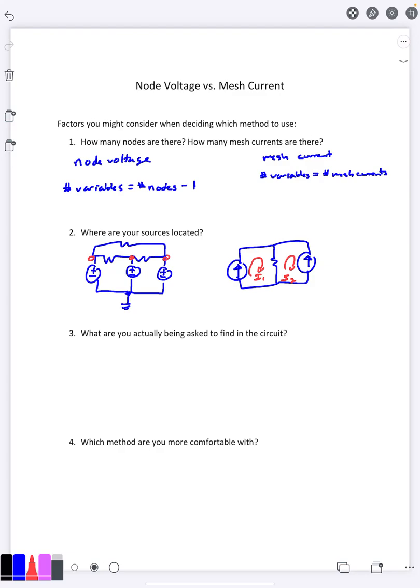Whereas if you're asked to find a voltage, you'd have to do an extra Ohm's law or something at the end to find that. Now again, doing an extra Ohm's law doesn't take that much time, but it's still something you could ask yourself whether it's worth using node voltage or mesh current given the situation.